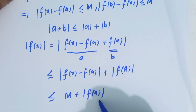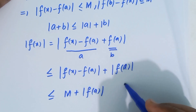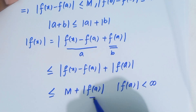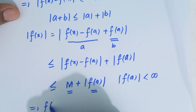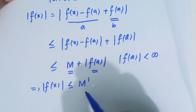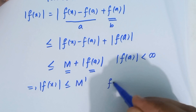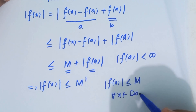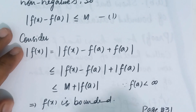Since f is a real-valued function, f(a) is always a finite positive real number — less than infinity. M is also a positive real number, and the sum of two positive real numbers is always a positive real number. If we call this sum M', then |f(x)| ≤ M', where M' is a positive real number. This shows that f is a bounded function, since |f(x)| ≤ M' for all x in the domain of f.